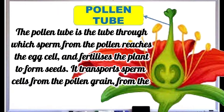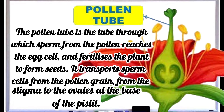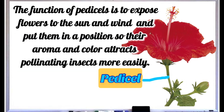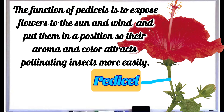The ovary itself will mature into a fruit, either dry or fleshy, enclosing the seeds. Pollen tube: the pollen tube is the tube through which sperm from the pollen reaches the egg cell and fertilizes it to form seeds. It transports sperm cells from the pollen grain, from the stigma to the ovules at the base of the pistil. Pedicel: pedicels hold individual flowers in place. Their function is to expose flowers to the sun and wind and position them so their form and color attract pollinating insects more easily.